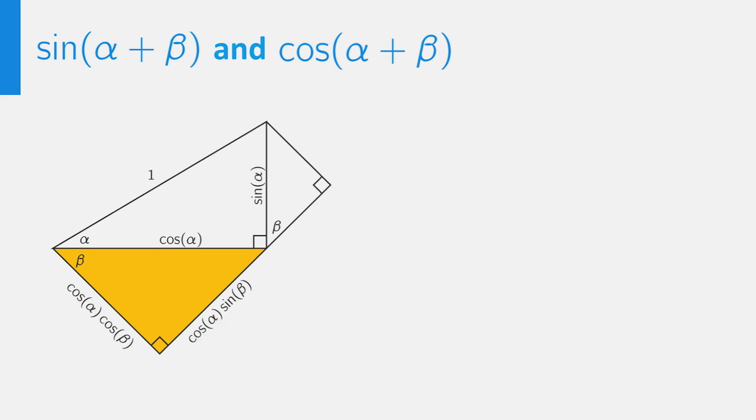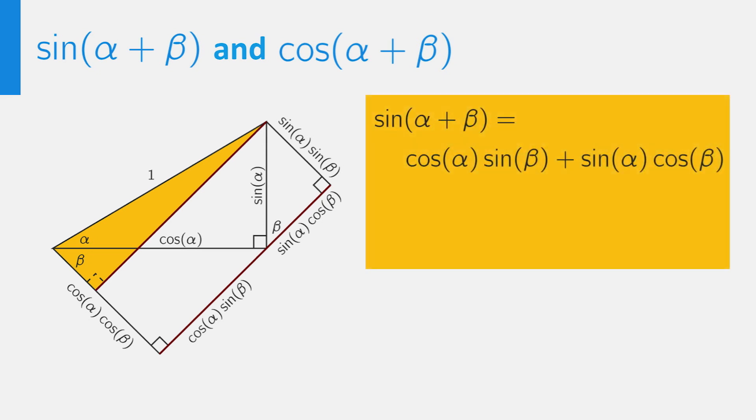We easily obtain the length of both the opposite and the adjacent side of the angle beta, involving this factor cosine of alpha. Then we consider the upper rectangular triangle with hypotenuse equal to the sine of alpha instead of 1. Similarly, we obtain the length of both the opposite and the adjacent side of the angle beta, involving this factor sine of alpha. Now we create an extra rectangular triangle with one of the angles equal to the sum of alpha and beta. Note that the hypotenuse of this triangle is equal to 1. This implies that the sine of alpha plus beta is equal to the length of the red sides. This is the addition formula for the sine.